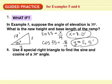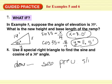Number 8. Use a special triangle to find the sine and cosine of a 30-degree angle. Done. See the previous slide. We already did that. See previous slide. I did 30 and 60-degree triangle with the last slide.